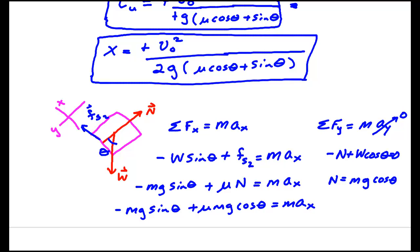And we see I can cancel an m. Kill that m, that m, and that m. And now I have aₓ equals g. But this time, it's μ cos θ minus sin θ.